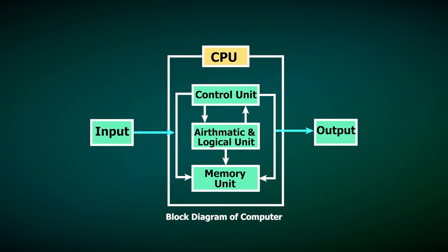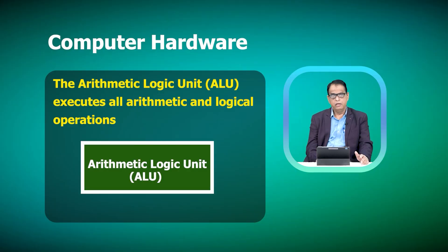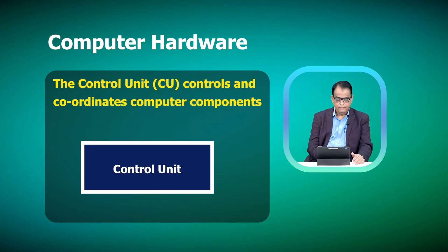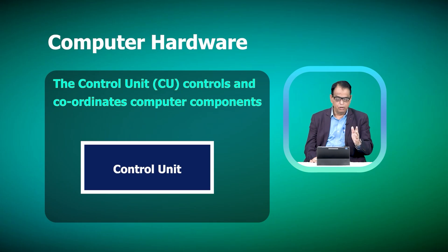In the block diagram, the input device is connected to the CPU, and there is an output device connected to the CPU. Inside the CPU we have the control unit, the arithmetic and logic unit, and the memory unit. The arithmetic and logic unit executes all arithmetic and logical instructions, which is why it is called the arithmetic and logic unit. The control unit coordinates all components of the computer system.